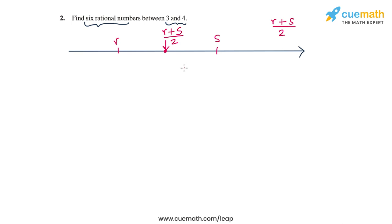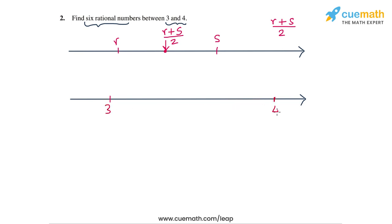Let's apply this approach to 3 and 4. Let's plot 3 and 4 on the number line to help us visualize better. The midpoint of 3 and 4 is 3 plus 4 by 2, which is 7 by 2. So 7 by 2 is one rational number that lies between 3 and 4.